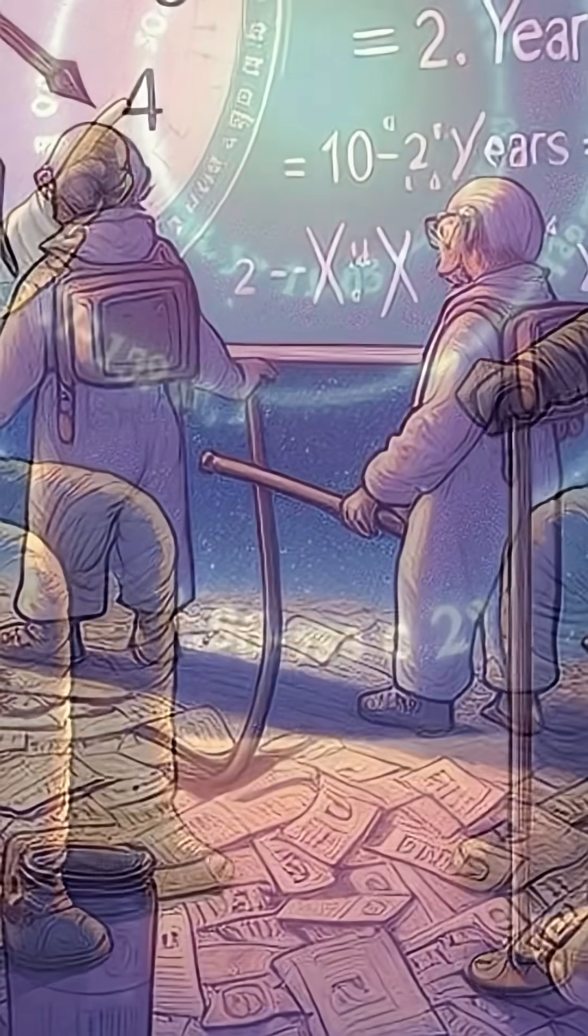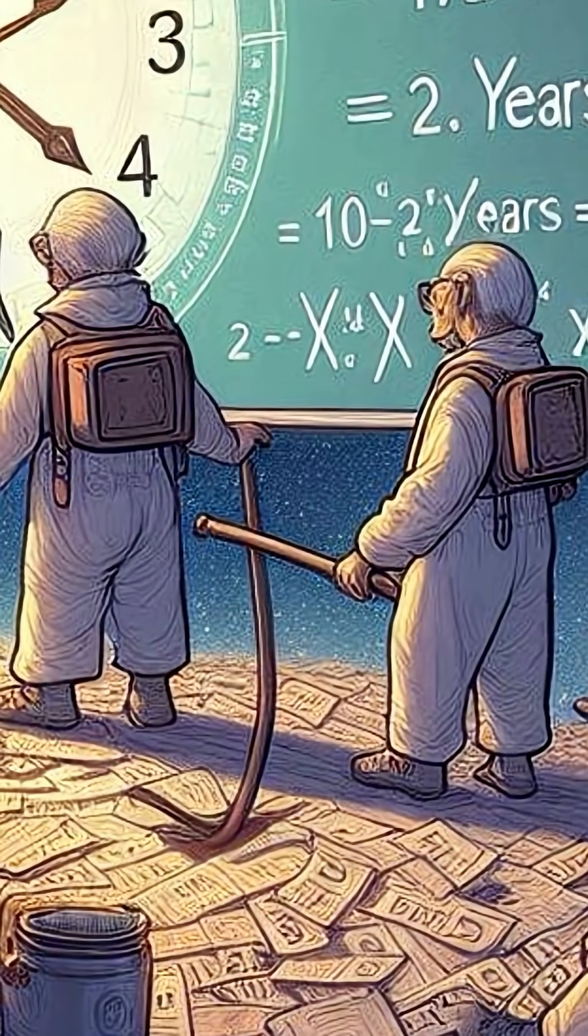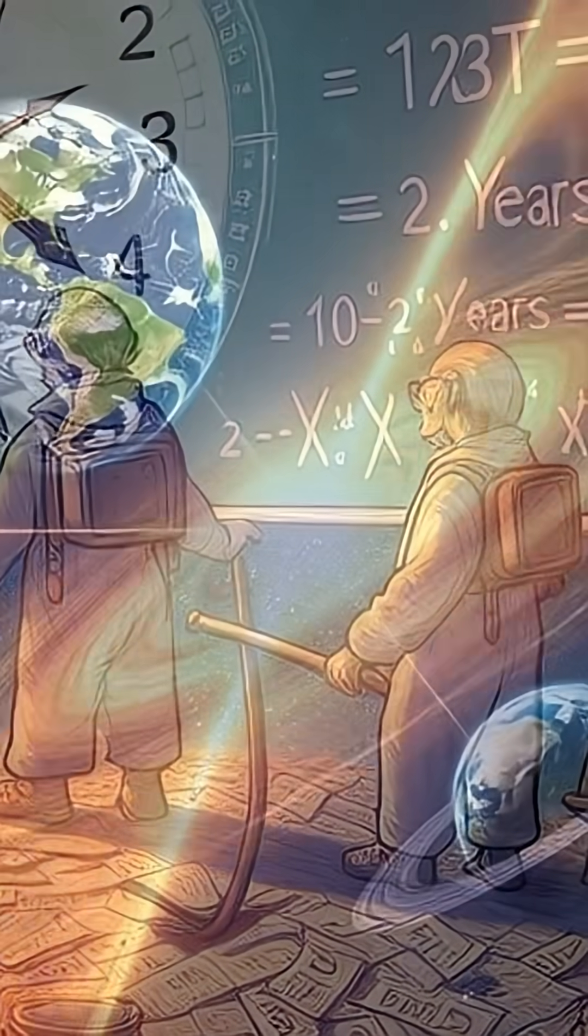Upon their return, the traveling twin has aged only 6 years, while the earthbound twin has aged 10 years. The traveling twin is indeed younger.